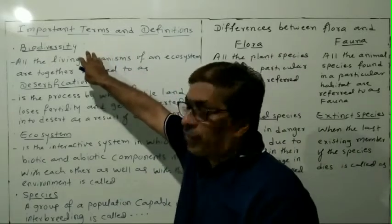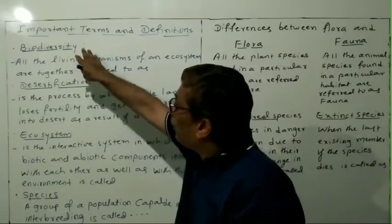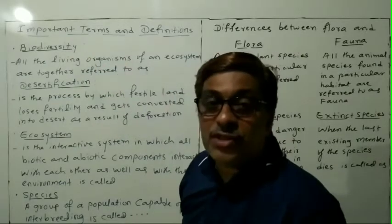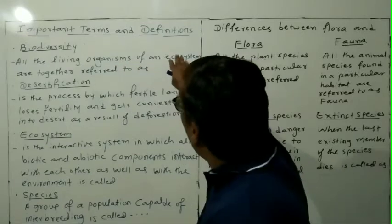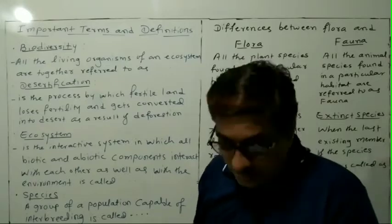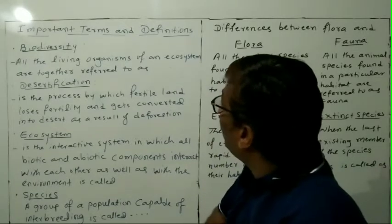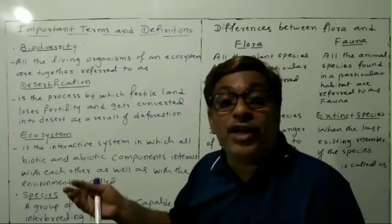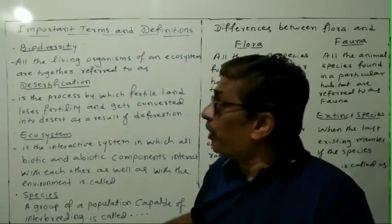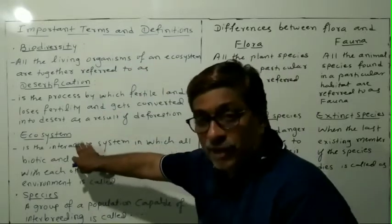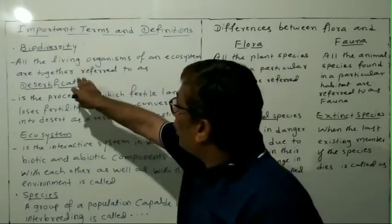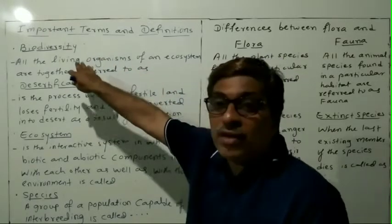What is biodiversity? All the living organisms of an ecosystem — ecosystem means the system of interaction between biotic and abiotic components — together referred to as biodiversity.